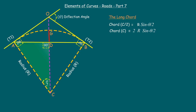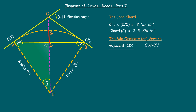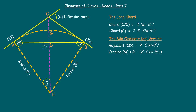Finally, the mid-ordinate M, also known as the versine. Using the same right-angle triangle: cos(θ/2) = adjacent side CD / hypotenuse R. So CD = R·cos(θ/2), and the mid-ordinate M = R − R·cos(θ/2). In the next episode we will see about the designing of a simple curve in detail using data measured on site.